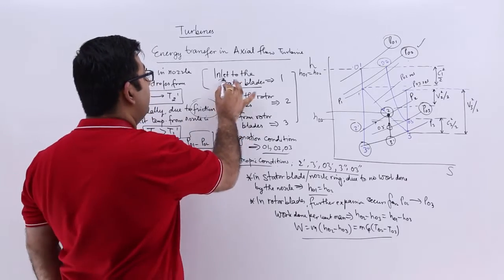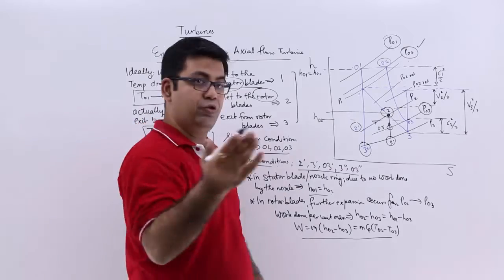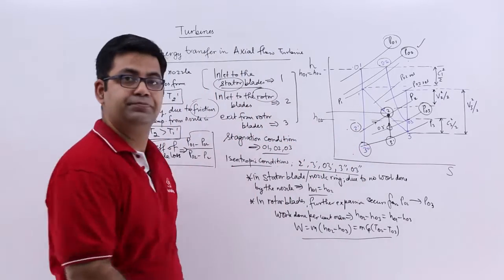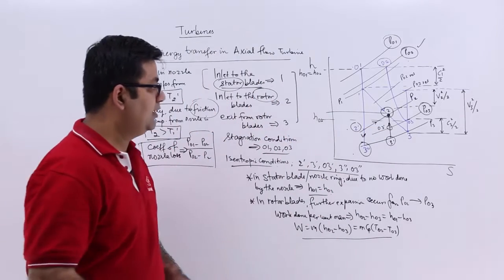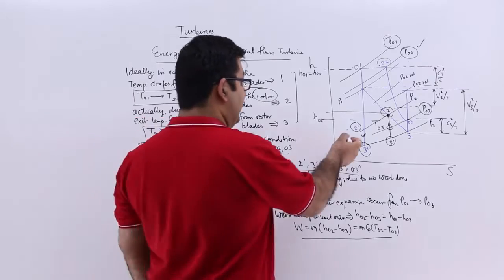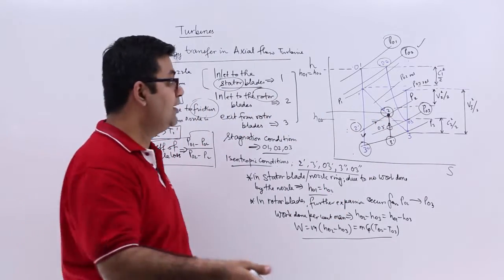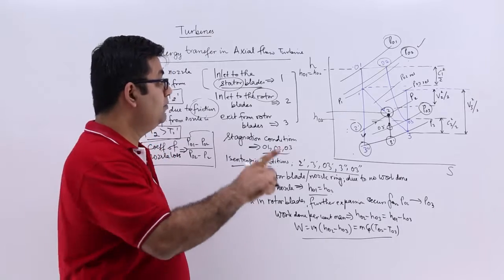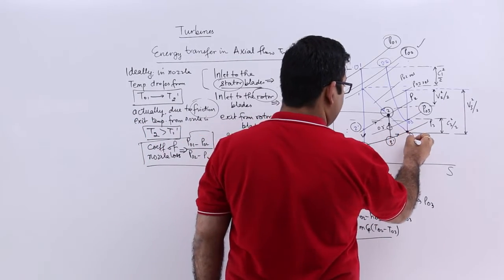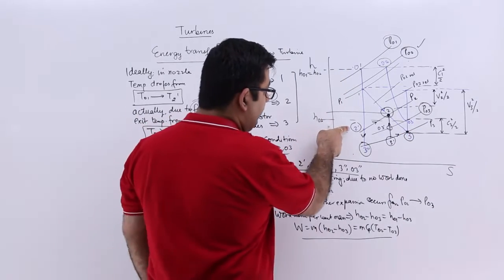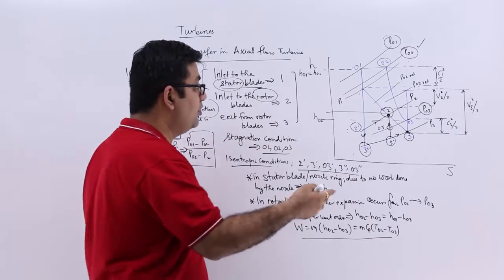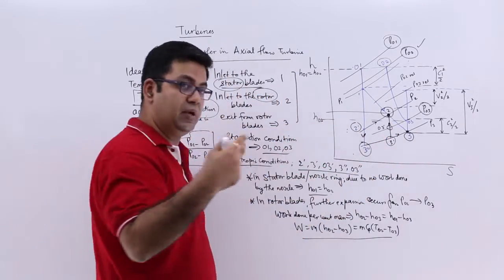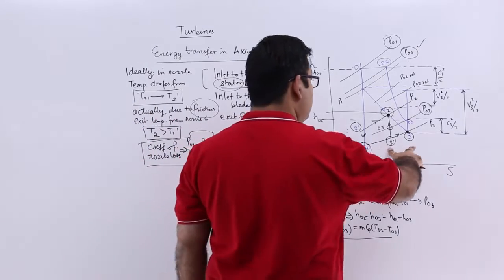Now that was in the stator blades. Moving to the moving blades — ideally, further expansion would take place from 2 dash to 3 double dash. But due to friction, 2 dash moved up to 2. So ideal expansion goes from 2 to 3 dash. However, in the actual scenario, the nozzle moved 2 dash to 2, so 2 to 3 dash should happen. But there is friction in the moving blades also, so 3 dash moves to 3.